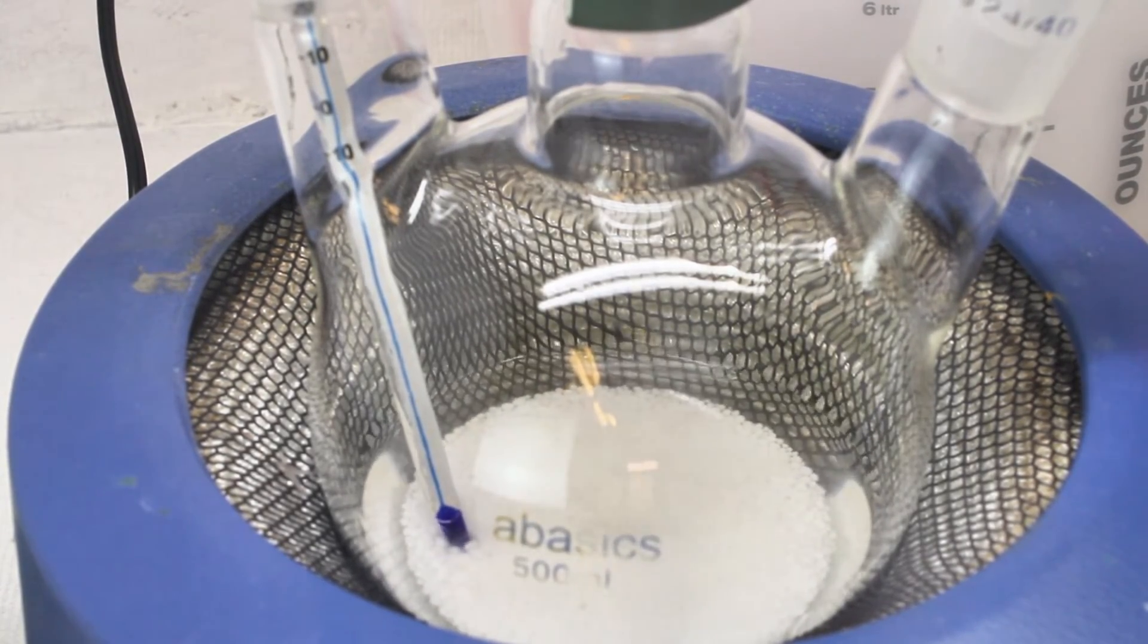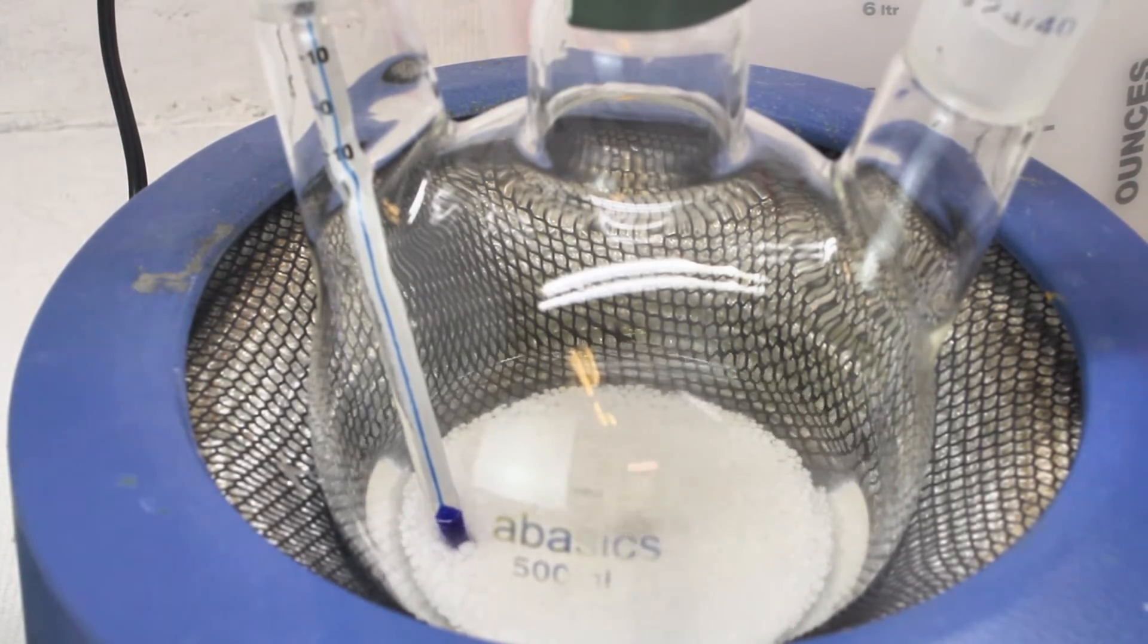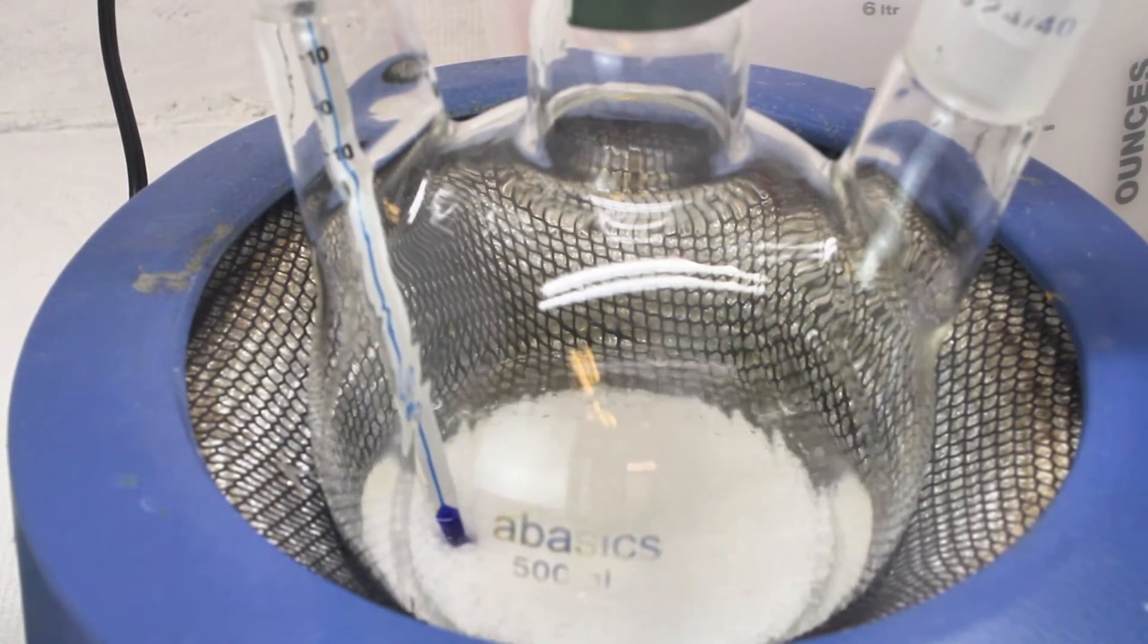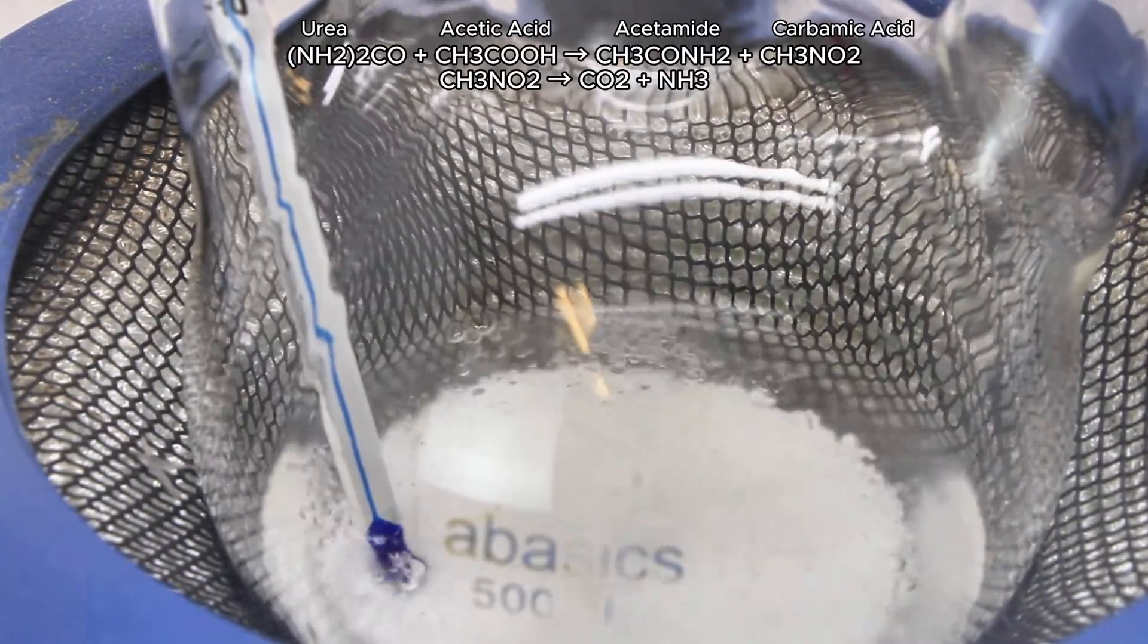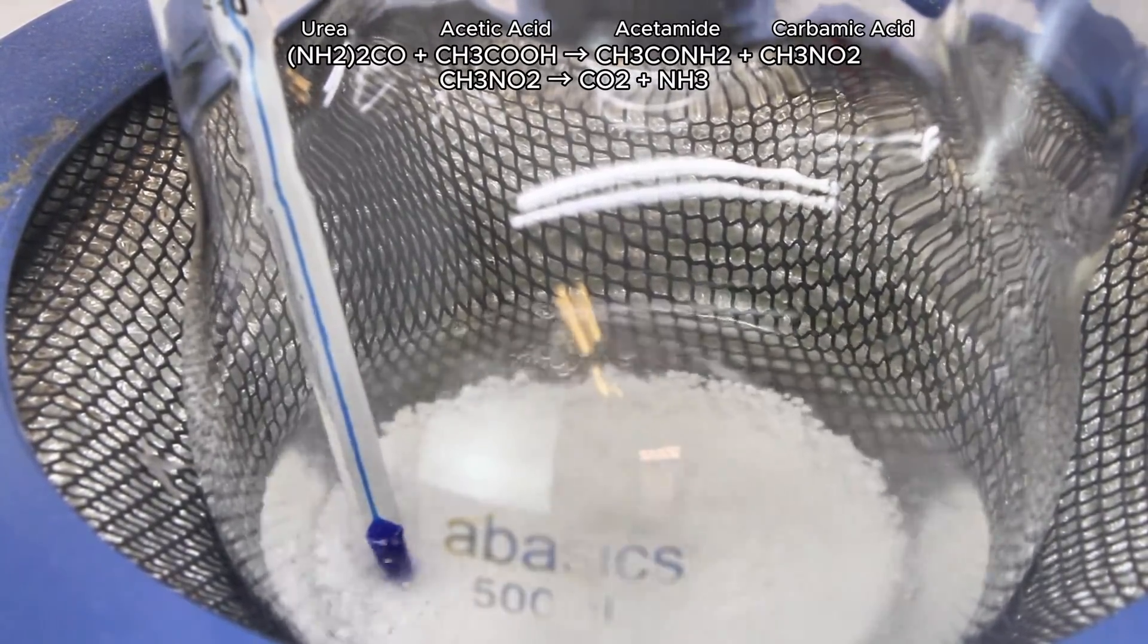At this point, acetic acid was refluxing in the condenser to prevent it from boiling away, and there are a few different reactions happening. In the first reaction, molten urea reacts directly with acetic acid to form acetamide and carbamic acid.